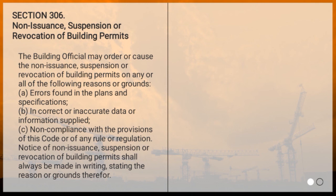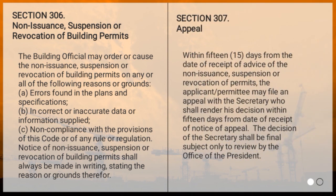Section 306, Non-issuance, Suspension, or Revocation of Building Permits: the building official may order the non-issuance, suspension, or revocation of building permits on any of the following reasons or grounds — errors found in this Code or any rule or regulation. Notice of non-issuance, suspension, or revocation of building permits shall always be made in writing, stating the reason or grounds therefor. Section 307, Appeal: within 15 days from the date of receipt of advice of the non-issuance, suspension, or revocation of permits, the applicant or permittee may file an appeal with the secretary, who shall render his decision within 15 days from the date of receipt of the notice of appeal. The decision of the secretary shall be final, subject only to review by the Office of the President.